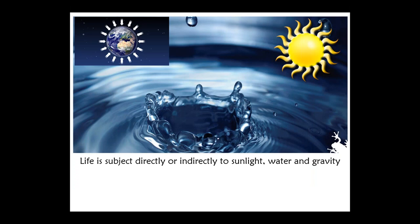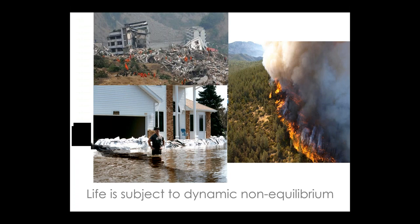Everything on the planet is subject directly or indirectly to sunlight — all energy for all organisms comes from sunlight. We're subject directly or indirectly to water, where all chemistry is done. And to gravity — all organisms either use gravity to stay on the planet or have developed strategies to overcome gravity, like bird flight. Conditions on Earth are constantly changing, meaning they are dynamic. Life is subject to dynamic non-equilibrium — things are always changing, as we've seen in recent years with changing weather patterns. Organisms that can adapt and evolve to these changes are the ones that survive, whereas humans tend to build structures that cannot adapt.